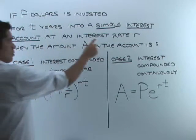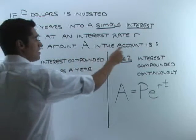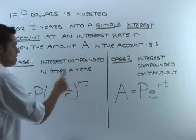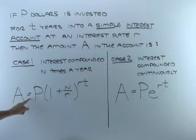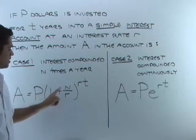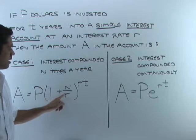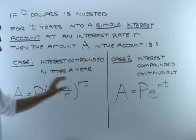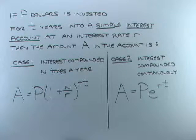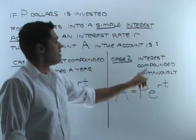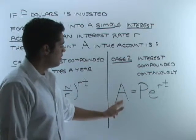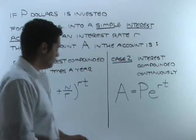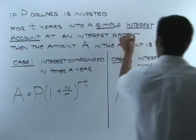At an interest rate of R, the amount A in the account depends on two cases. If your interest is compounded n times a year, the formula is: A equals P times (1 plus R over n) raised to the power n times T. If the interest is compounded continuously, the formula is: A equals P times e raised to the R times T.